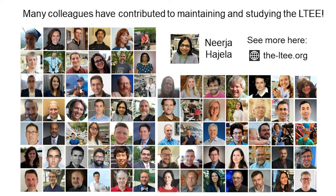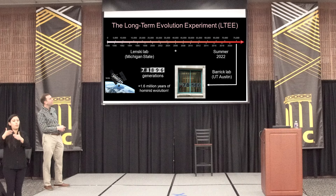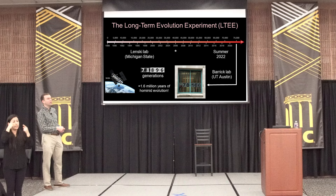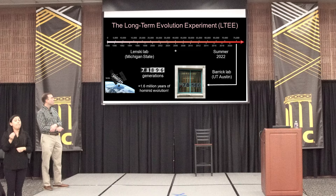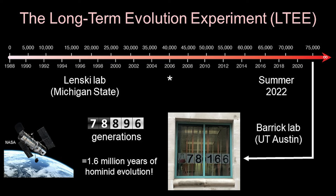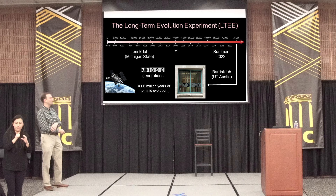The history of the experiment: it started in 1988 in the Lenski lab, then transitioned to Michigan State. I was a postdoc from 2006 to 2010, started my own lab at UT Austin, and then we decided to trade the experiment off to me. I'm a bit younger than Rich, and hopefully I can keep it going for a couple of decades. We're up to 78,896 generations, which means I've only done 3,800 of the complete generations in my lab at this point. If you visit in eight years, we're going to flip over the next number and be at 100,000 generations - that will definitely be a milestone. If you convert this to human generation years, you might reach something like 1.6 million years of hominid evolution.